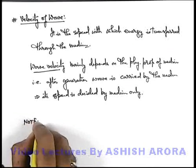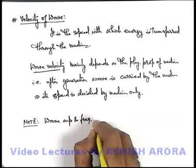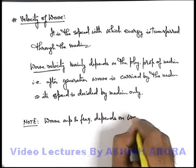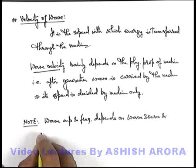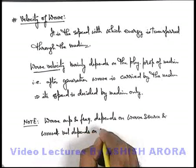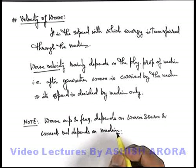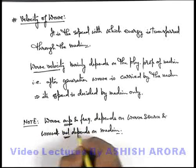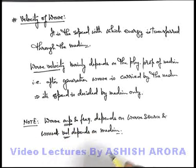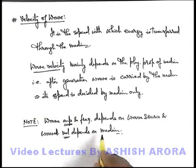At last, we can write down a note to summarize: wave amplitude and frequency mainly depend on the wave source, and wave velocity depends on the medium. In detail, we'll study that in some particular situations when wave amplitude becomes excessively high, wave velocity also starts depending on amplitude — but that is beyond the scope of the topics we are studying. In the advanced physics section of Physics Galaxy, you'll study how wave velocity also depends on amplitude. In this section, I'll be restricting myself up to this level only.